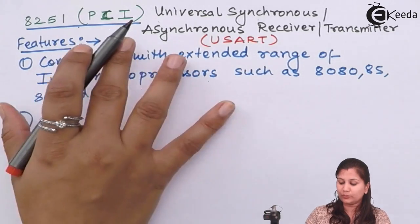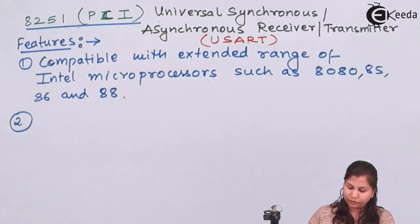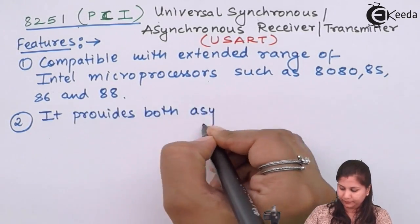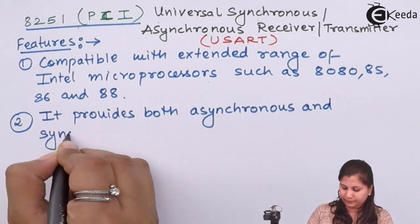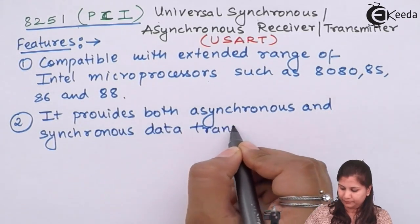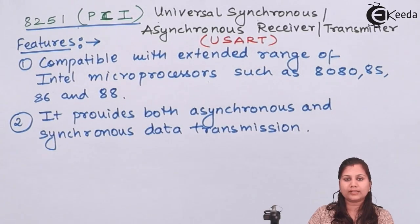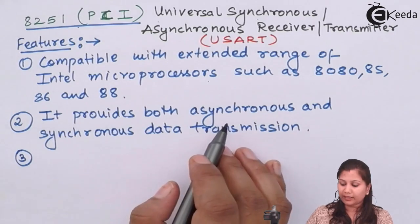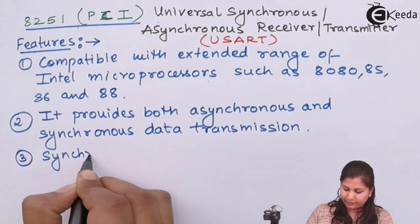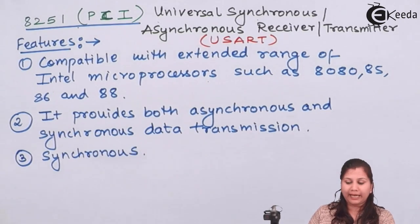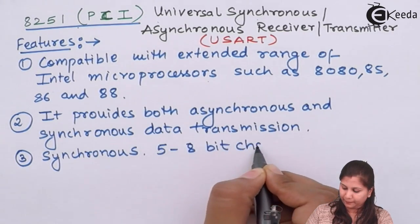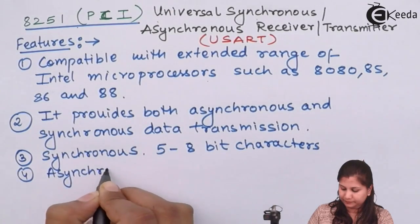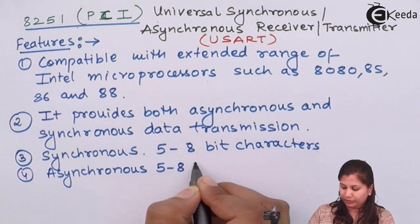The second feature of the 8251 is that it provides both asynchronous and synchronous data transmission. Because it transmits data in both forms, for synchronous data transmission it supports 5 to 8 bit characters, and for asynchronous transmission it can also transmit 5 to 8 bit characters.